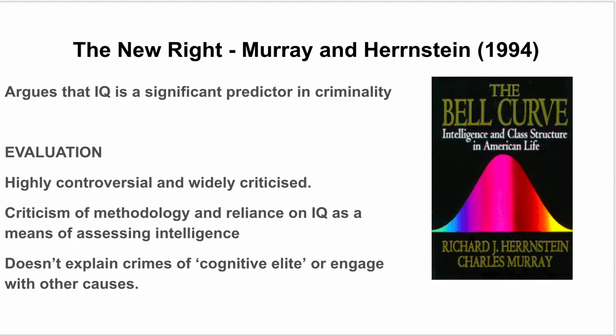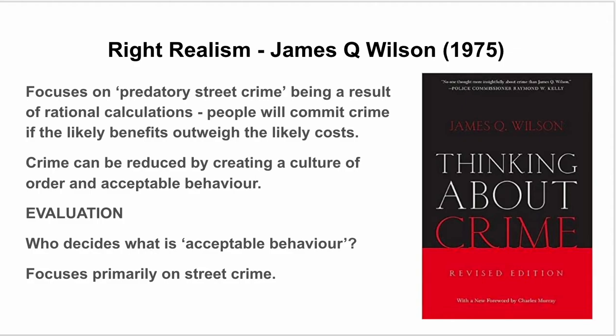Now on to right realism. The main proponent is James Q. Wilson, whose first significant work was Thinking About Crime in 1975, focusing on predatory street crime. Wilson's overall argument is that crime is based on rational calculations — individuals commit crime when they think the benefits outweigh the costs. The answer is therefore about creating a culture of order and acceptable behavior to influence people not to commit crime.